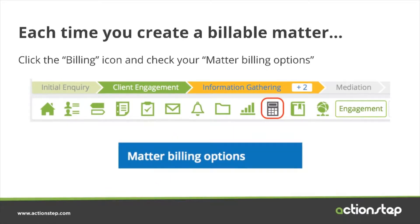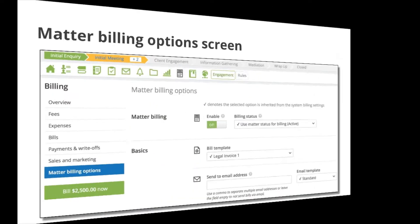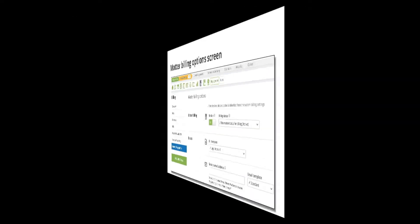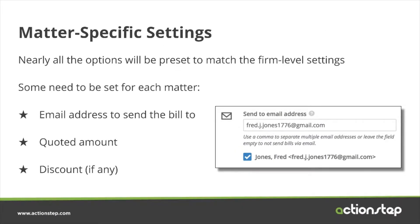In Enhanced Billing Mode, each time you create a billable matter, you should click on the Billing icon within the matter and then go and check your matter billing options. The options screen looks something like this. Most of the options are preset from your firm defaults. However, for each matter there are certain fields that you do need to check specifically.